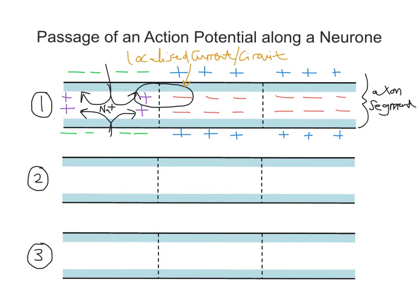A localised current or circuit, because the positive is attracted to the negative region adjacent to it. Now when that happens, it causes the opening of adjacent voltage-gated sodium channels further along the axon — in this sort of second box, or second part of the axon segment. Now as those regions begin to depolarise, the regions before them start to repolarise — we're restoring the resting potential. So as the second box depolarises, the bit before it will repolarise, and that's because potassium leaves the axon through potassium-gated channels. Once we reach the overshoot of plus 40 millivolts, sodium channels close, potassium channels open, and potassium rushes back out to repolarise the axon.